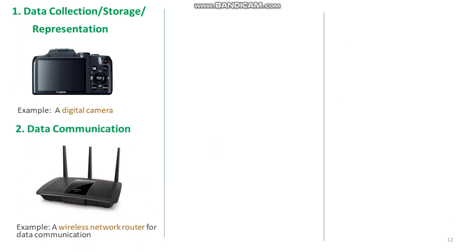The next purpose is data communication. The applications of embedded systems range from satellites to home networking systems. The mode of transmission can be either wired or wireless medium. A typical example of data communication is a wireless network router, and also hubs and switches, which act as mediators in data communication and provide various features like data security, monitoring, etc.